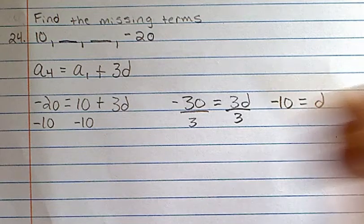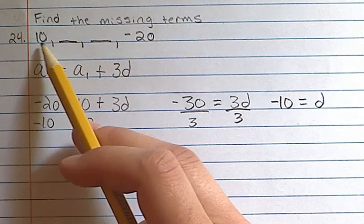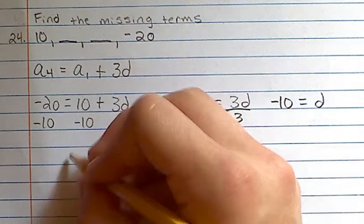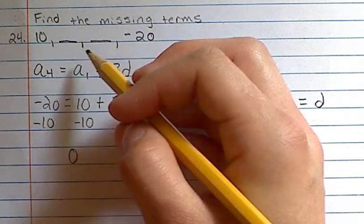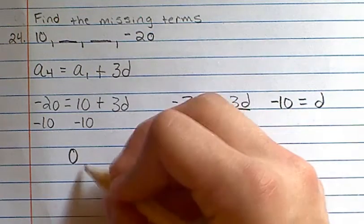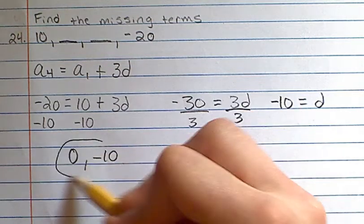So using this, we can apply it to our sequence. If we go one spot to the right from 10, we subtract 10, so we'll get 0 for our first missing term. Go to the right one more spot and we subtract another 10, and we get negative 10. So these are our two missing terms.